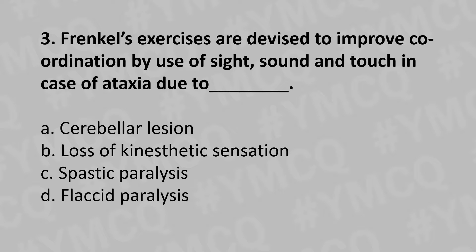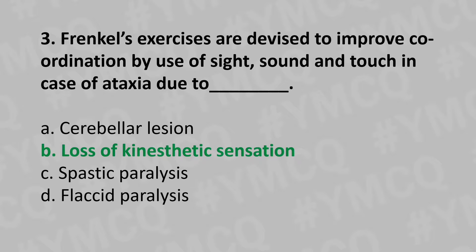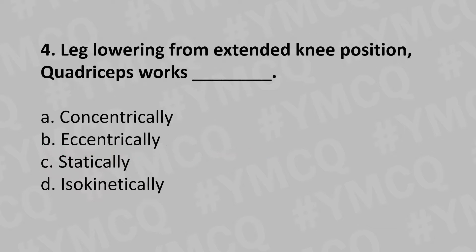Option A: Cerebellar lesion, Option B: Loss of kinesthetic sensation, Option C: Spastic paralysis, Option D: Flaccid paralysis. And the answer is Option B: Loss of kinesthetic sensation. Moving to our fourth question: leg lowering from extended knee position — the quadriceps works how?